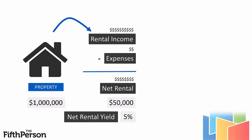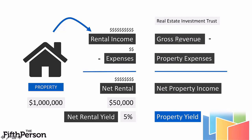We usually call it net rental yield if you buy investment property under your own name or your spouse's name. For REITs or Real Estate Investment Trusts, it's exactly the same, but instead of calling it net rental yield, we call it property yield. REITs classify this in their income statement as gross revenue — the rental income across all the properties in their portfolio — minus off all the property expenses incurred, giving a net property income. Net property income divided by property valuations gives you your property yield.